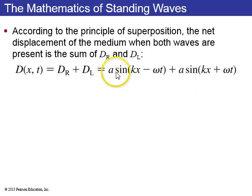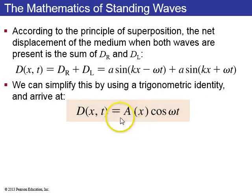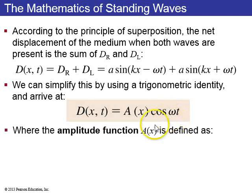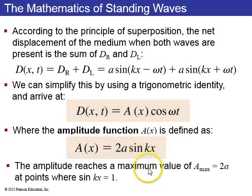When we add them, it's just, here's the sum, A sine kx minus omega t plus A kx plus omega t. We can simplify this by using a trigonometric identity, which I might do in class. And you get, it's A, some function of x, times cos omega t, where the amplitude function A of x is defined as 2A sine kx. So you've got oscillations, like simple harmonic motion, and then the amplitude depends on position, and that's a standing wave.